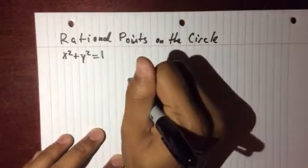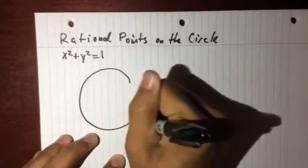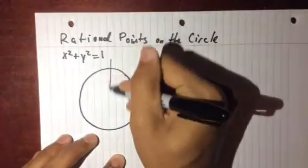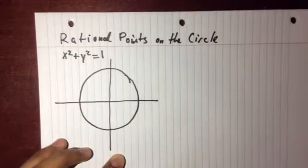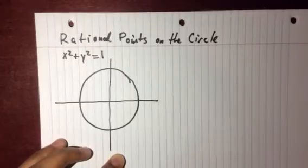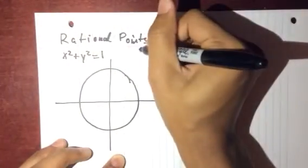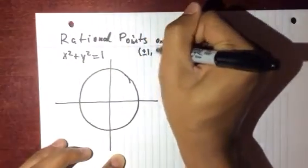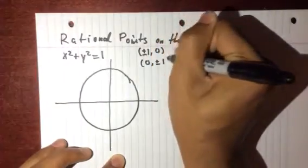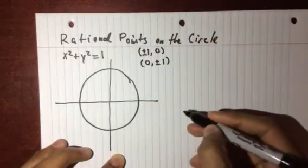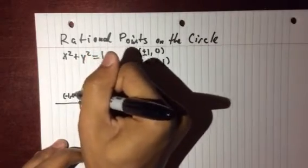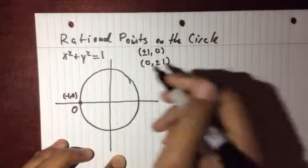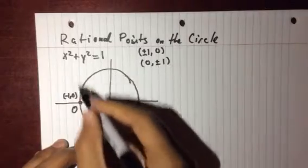Let's just draw that. Right away you can figure out some of the integer solutions: plus or minus one, zero and zero, plus or minus one. For convenience we're going to pick this to be our origin point, and that's a solution to this equation, that's a point on the circle.